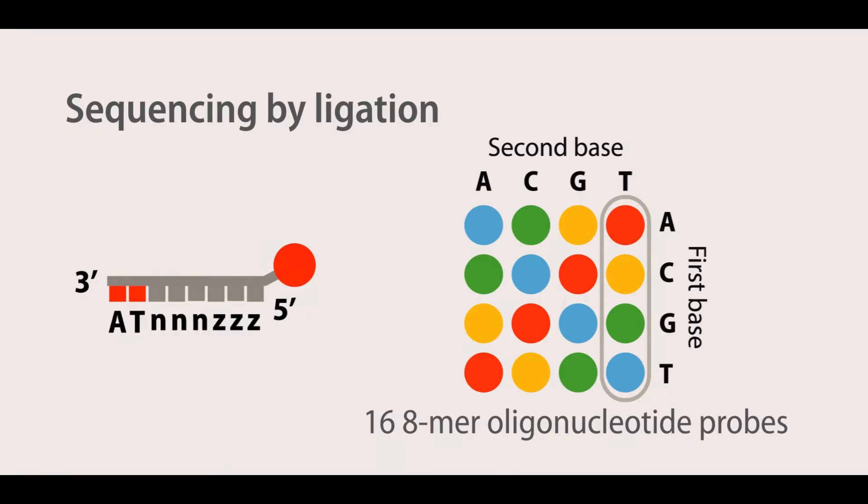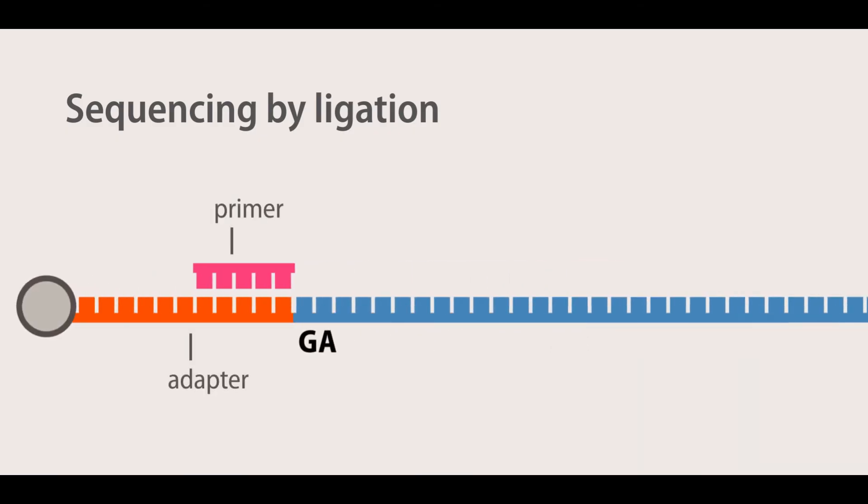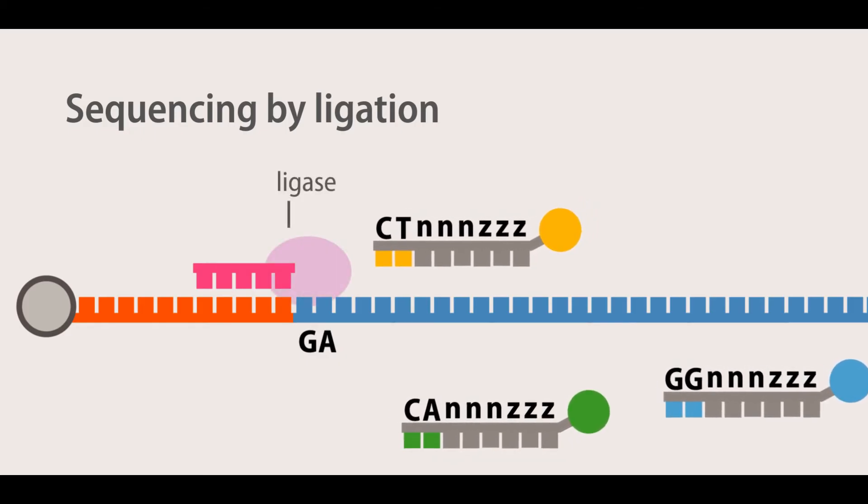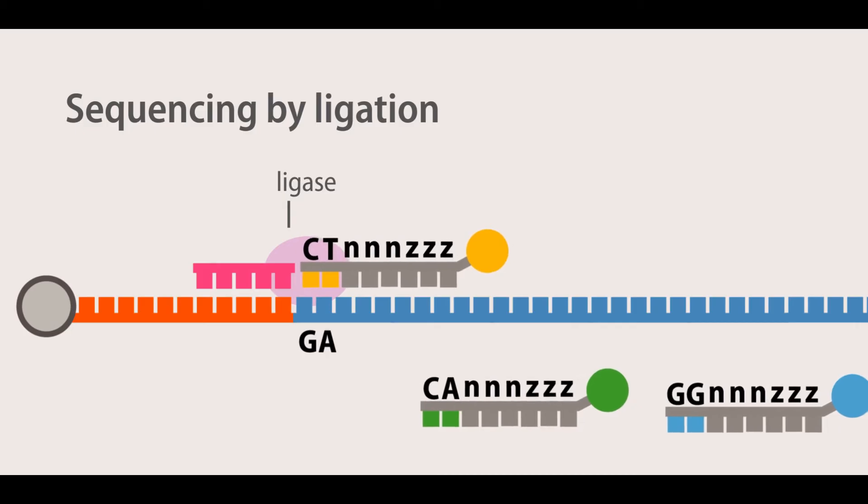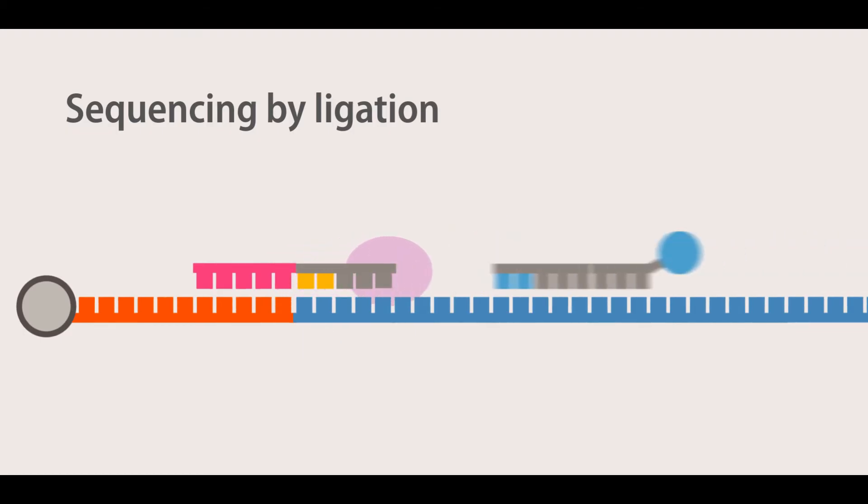The sequencing reaction commences by binding of the primer to the adapter sequence and then hybridization of the appropriate probe. This hybridization of the probe is guided by the two probe-specific bases, and upon annealing, is ligated to the primer sequence through a DNA ligase. Unbound oligonucleotides are washed away. The signal is detected and recorded. After that, the fluorescent signal, along with the last three bases of the 8-mer probe, are cleaved, and then the next cycle commences.